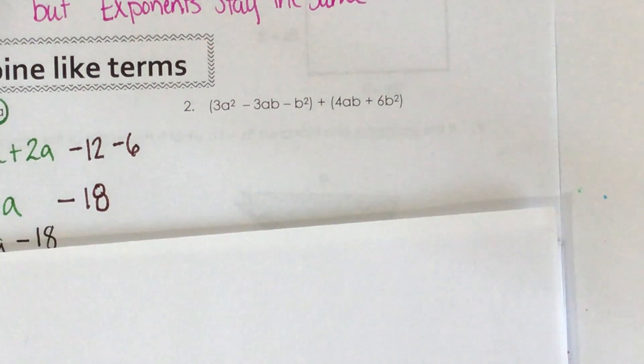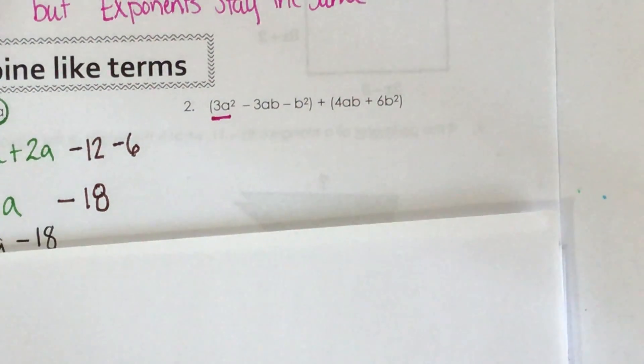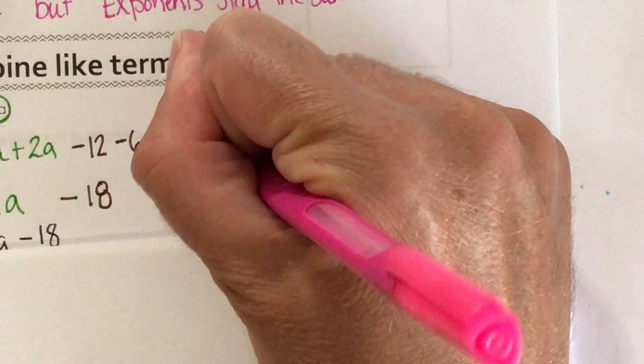So do I have any other a squares that I can combine with this 3a squared? And I don't. So I'm going to start with my 3a squared.